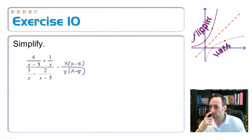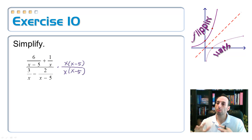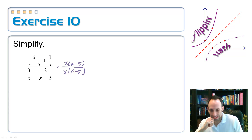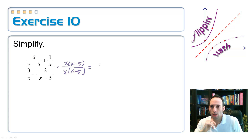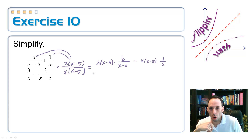Alright, took care of Rowan and stepped out for a haircut. Let's pick up where we left off. We decided to multiply the top and the bottom by the least common multiple of all the fractions — basically x times (x minus 5). Writing it clearly: x times (x minus 5) times 6 over (x minus 5) on the top, plus x times (x minus 5) times 1 over x — distributing across both terms.